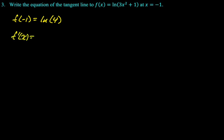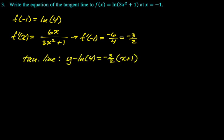f prime. All right. So, chain rule. It's going to be the derivative of (3x² + 1) over (3x² + 1). It's 1 over u times the derivative of u. And now I'm going to plug in negative 1. So, f'(-1) is going to be -6 over 4, which is -3/2. And then we need to write the equation of the tangent line. I'm going to do it in point-slope form. So, the tangent line is y minus the natural log of 4 equals -3/2 times the quantity (x + 1). And there you go.